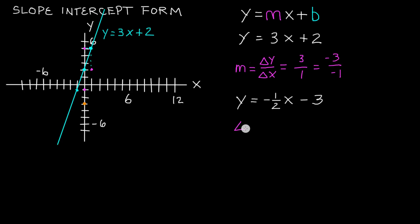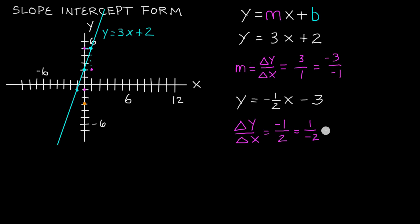Our slope equals the change in y divided by the change in x. There are two ways to write negative 1 half: we can bring the negative to the numerator and look at it as negative 1 over 2, or move it to the denominator as positive 1 over negative 2. Both are identical to negative 1 half. This means we can either go negative 1 unit in the y direction for every positive 2 units in the x direction, or go positive 1 unit in the y for every negative 2 units in the x direction.